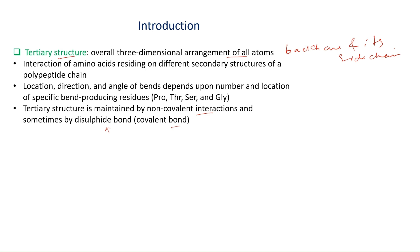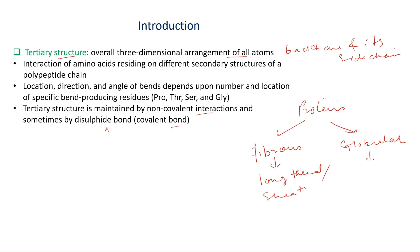Proteins are classified into two classes: fibrous proteins and globular proteins. Fibrous — like a fiber — means long thread- or sheet-like structures. Globular means spherical, so globular proteins are spherical in nature. Fibrous proteins are made up of only one kind of secondary structure, whereas globular proteins are a mixture of various types of secondary structures.